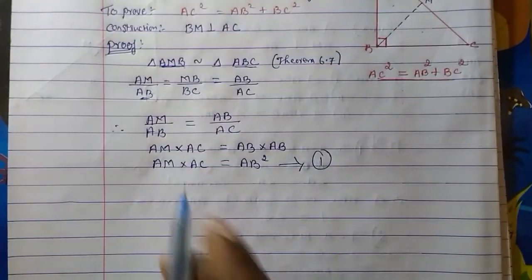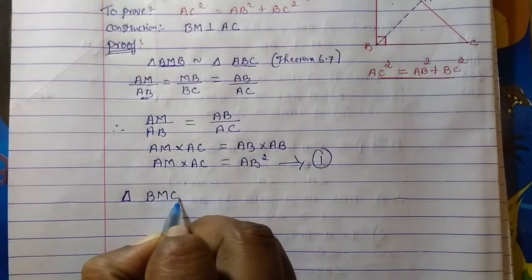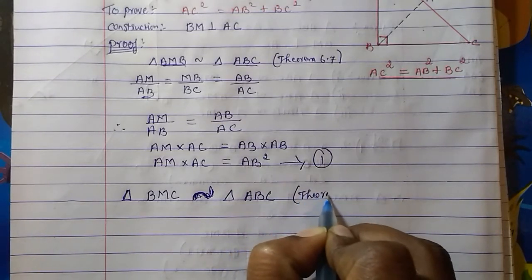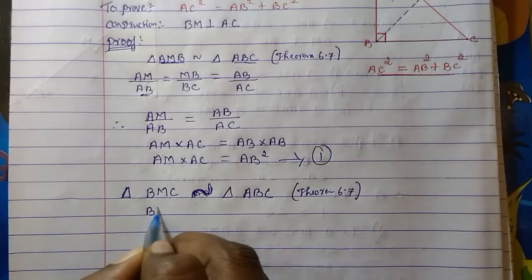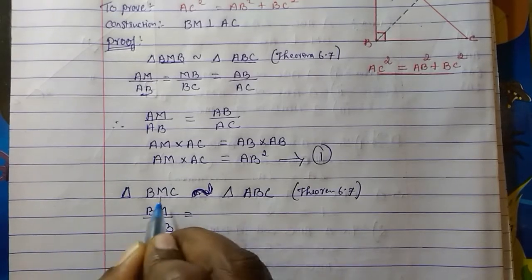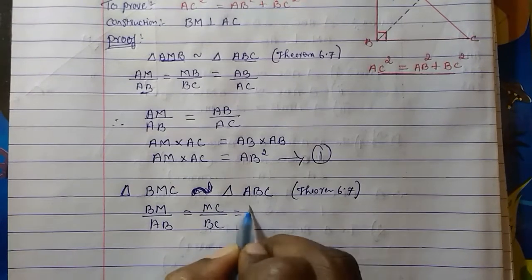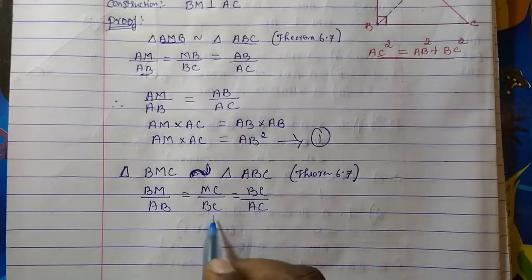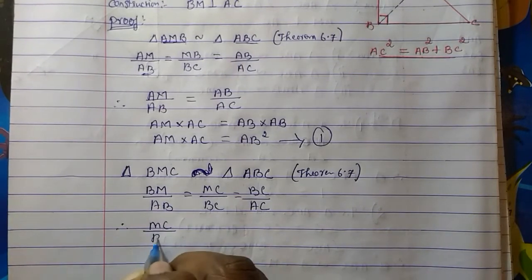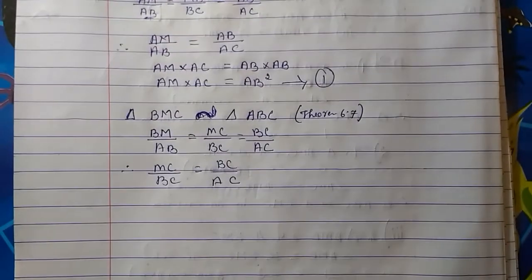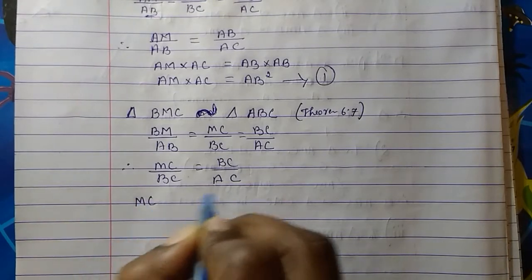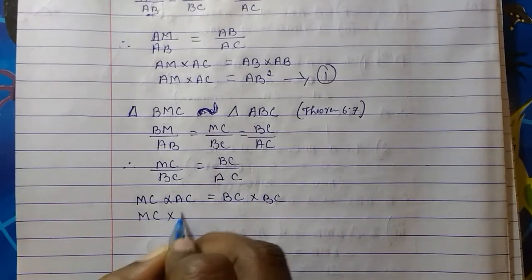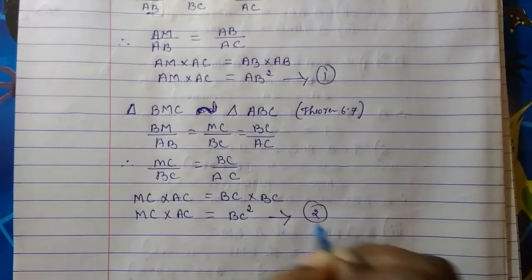Now let us take the second triangle. Triangle BMC is similar to triangle ABC by Theorem 6.7, so their corresponding sides are also equal: BM upon AB equals MC upon BC equals BC upon AC. Again, BC appears in both positions, so we take MC upon BC equals BC upon AC. Cross-multiplying gives MC into AC equals BC squared. Let's call this Equation 2.